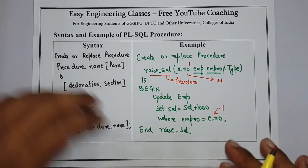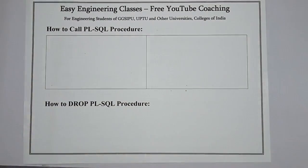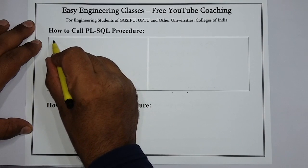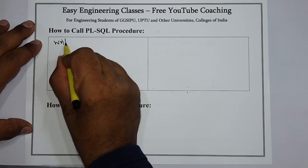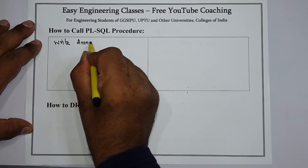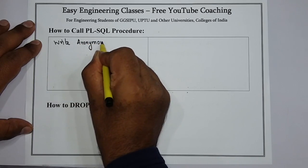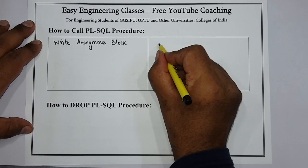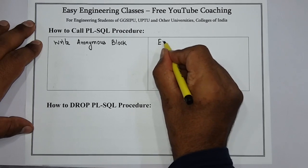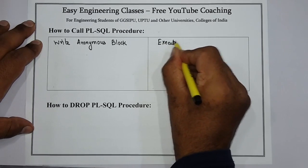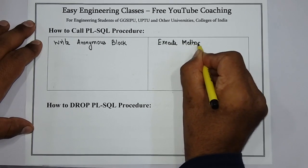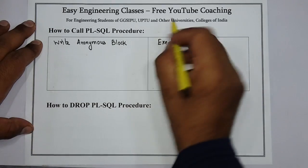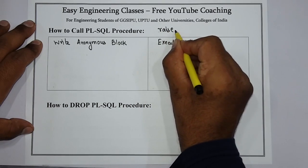Now let's see how we can call a procedure. There are two different ways to call a procedure. One is to write an anonymous block of PL/SQL program, and another is to use the EXECUTE method.